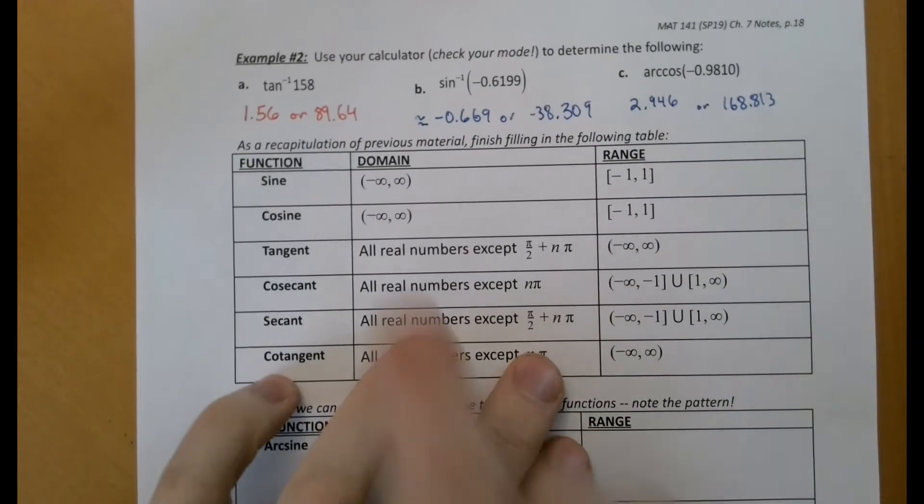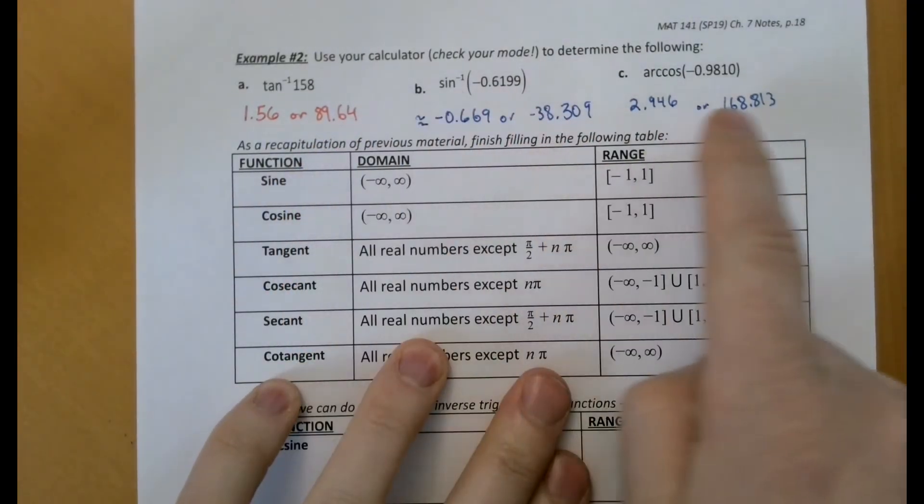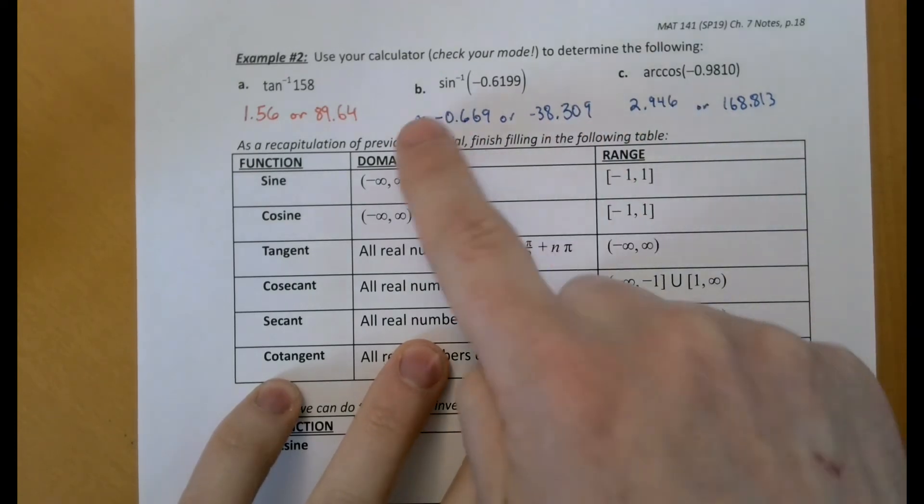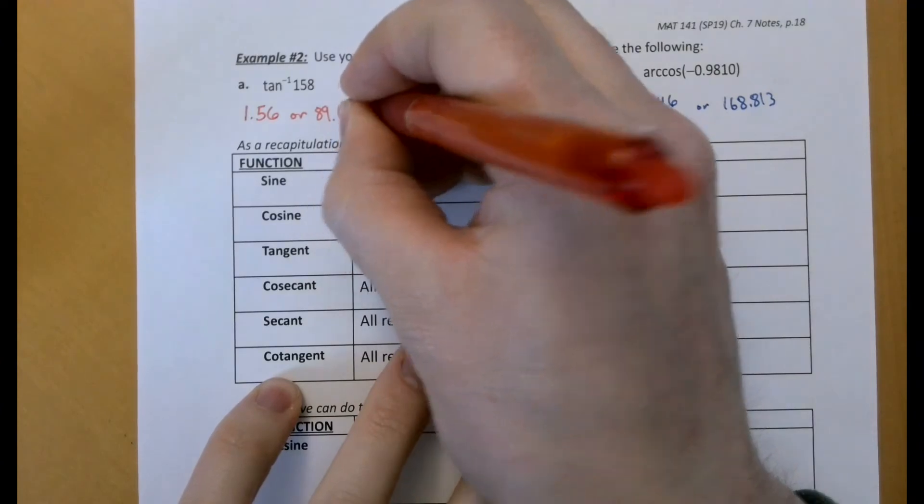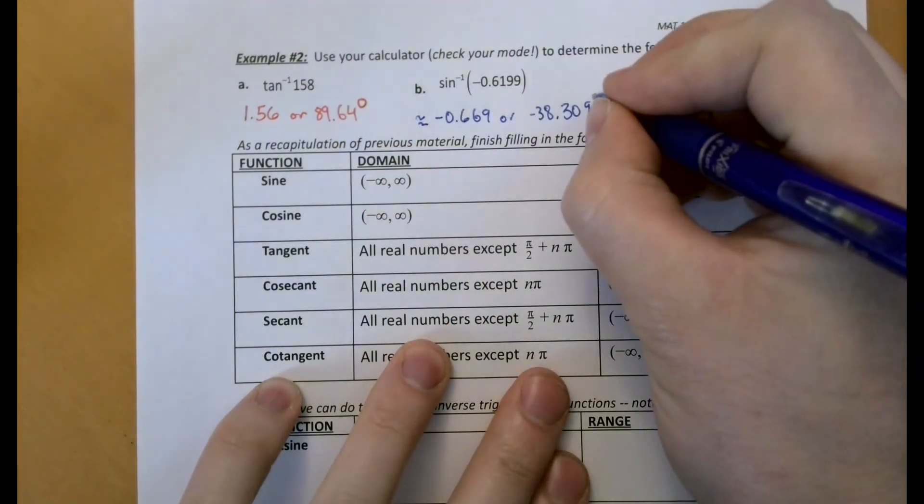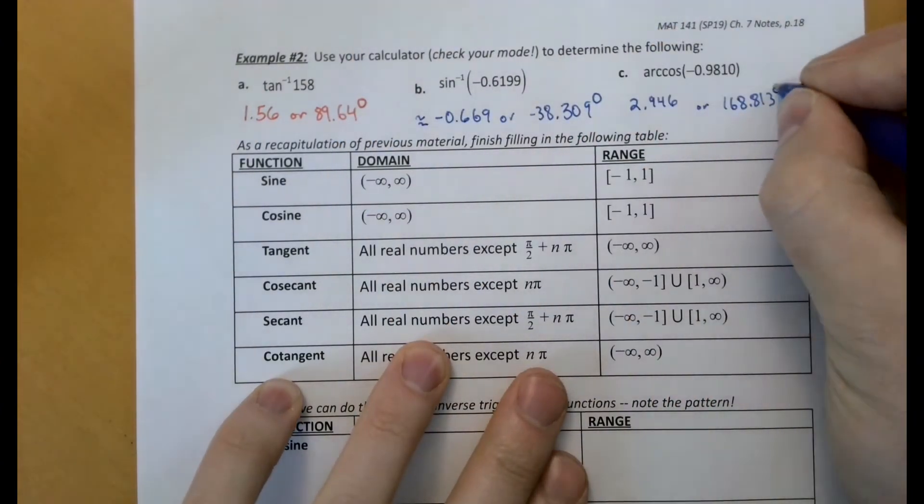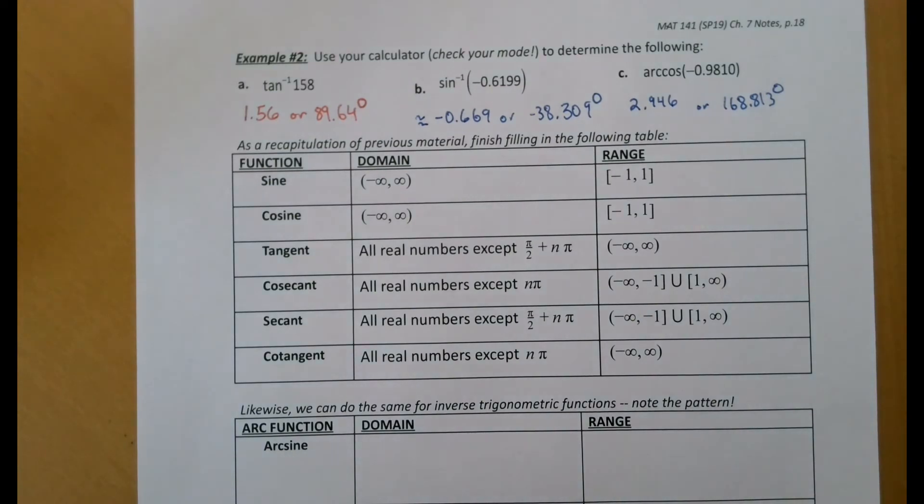So I need to go back and note, I made a mistake in all of these. These are all currently the way they're written should be understood as radians, even though we know they were supposed to be degrees. So I forgot to put the degree symbol in there. You've got to have that in there when you're talking about degrees.